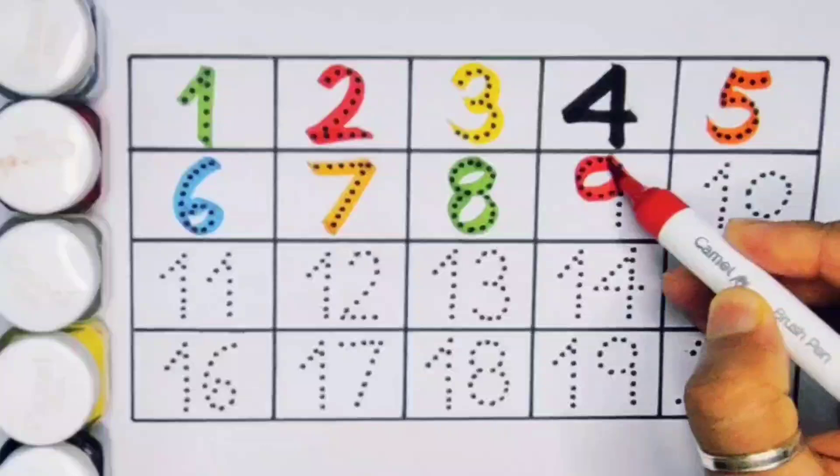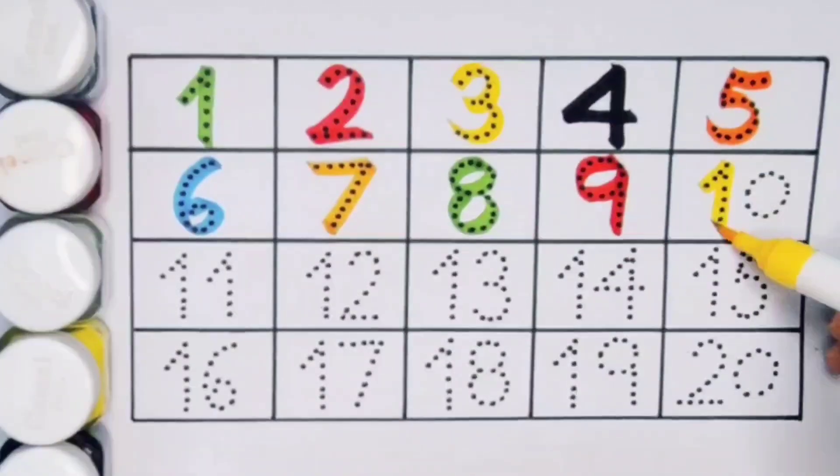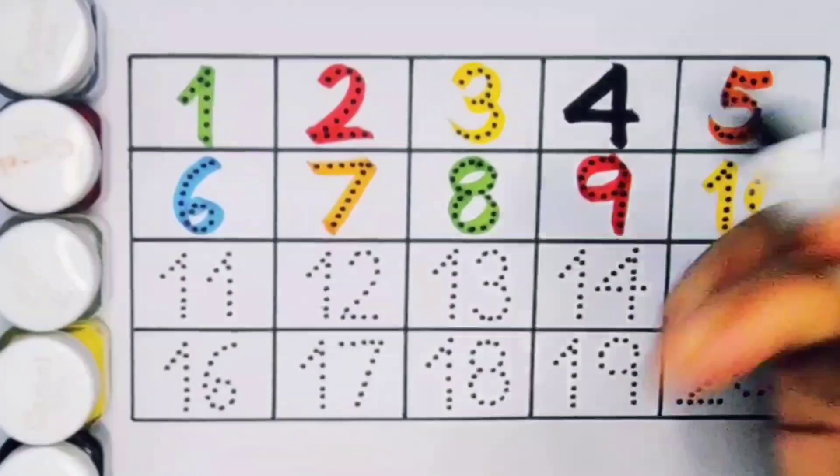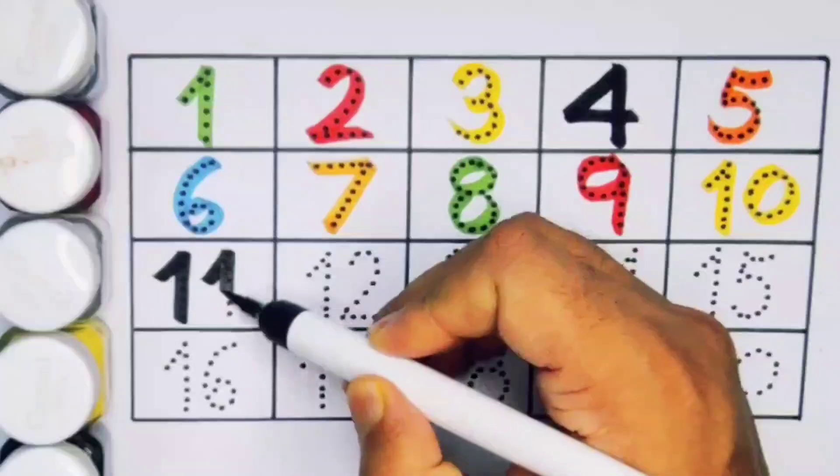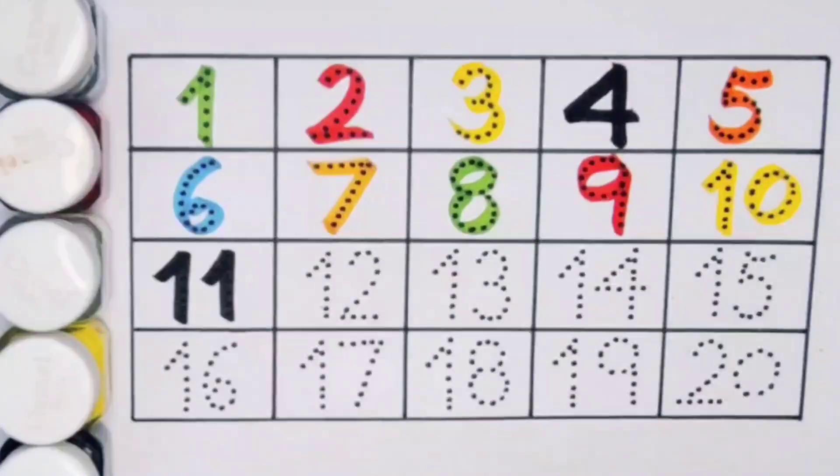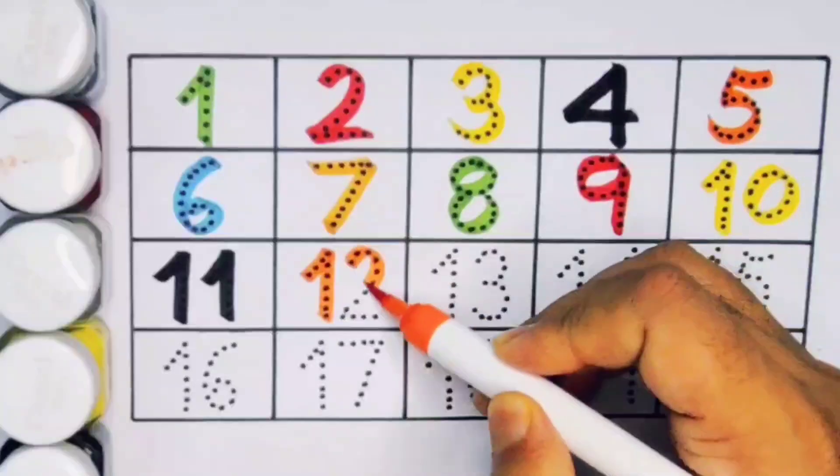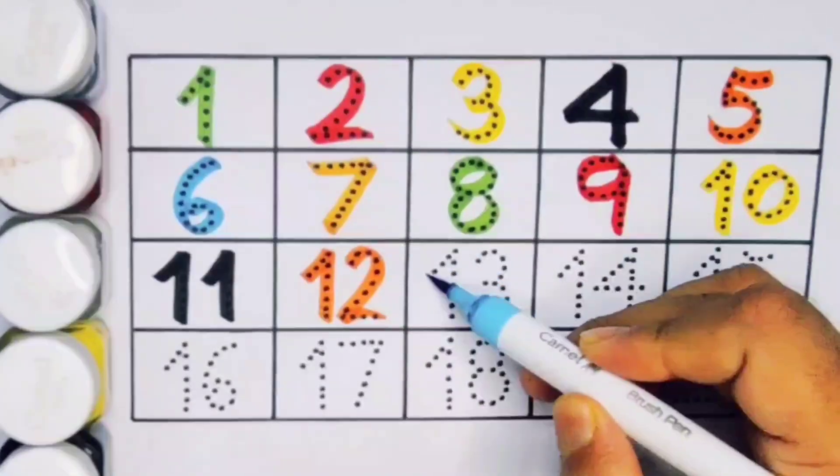Next kids, ten, one zero, number ten. Next kids, eleven, one one, number eleven. Next kids, twelve, one two, number twelve.